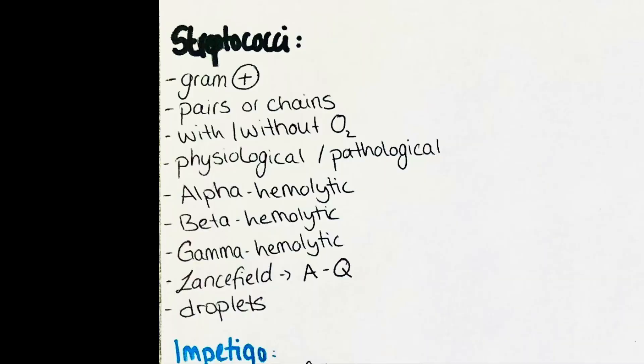Streptococci are gram-positive bacteria that can live in an environment that does or does not contain oxygen. They are usually found in pairs or chains and are physiologically found on the skin and mucous membranes. When they are in a certain range they are harmless for the body, but if they overpopulate the mucosa they can lead to a series of disorders.